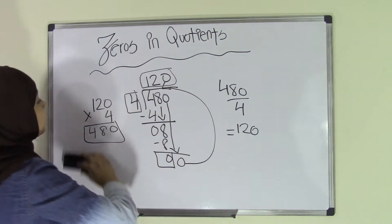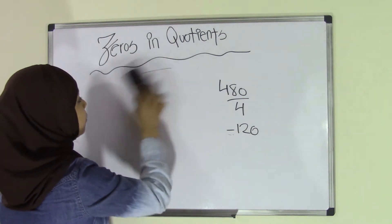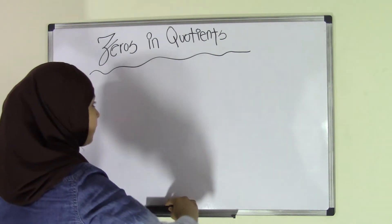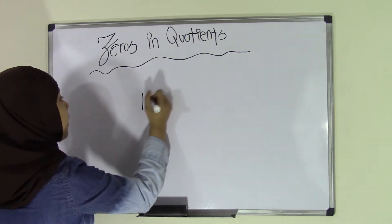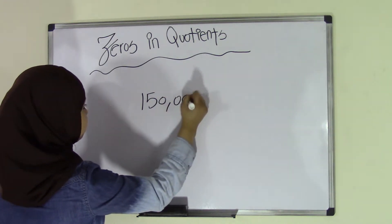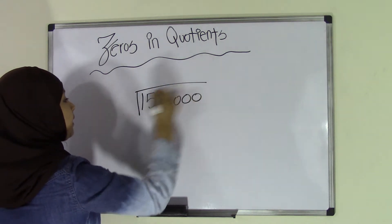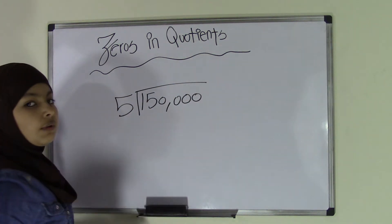Let's take a look at another example that has more 0s in it. So what if we have 150,000, that's a lot of 0s there, and we're dividing that by 5.